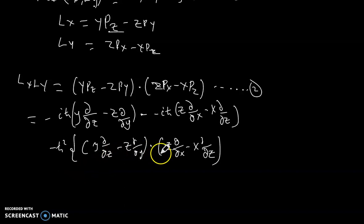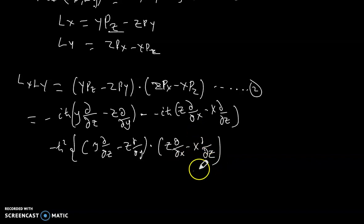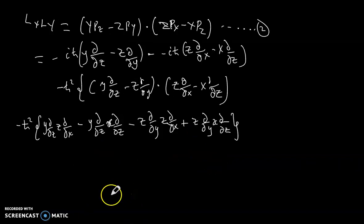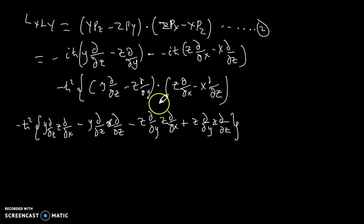The next step is for us to expand this bracket. In the previous video I didn't expand — I went straight to partial differentiation. But for the purpose of understanding, I would like us to first multiply these two things and open up this bracket. So it is Y·∂/∂Z multiplied by Z·∂/∂X, and Y·∂/∂Z multiplied by negative X·∂/∂Z, minus Z·∂/∂Y multiplied by Z·∂/∂X, plus Z·∂/∂Y multiplied by X·∂/∂Z.